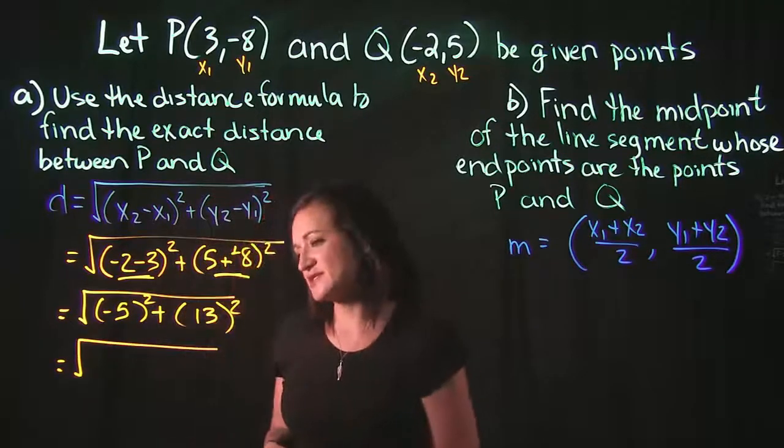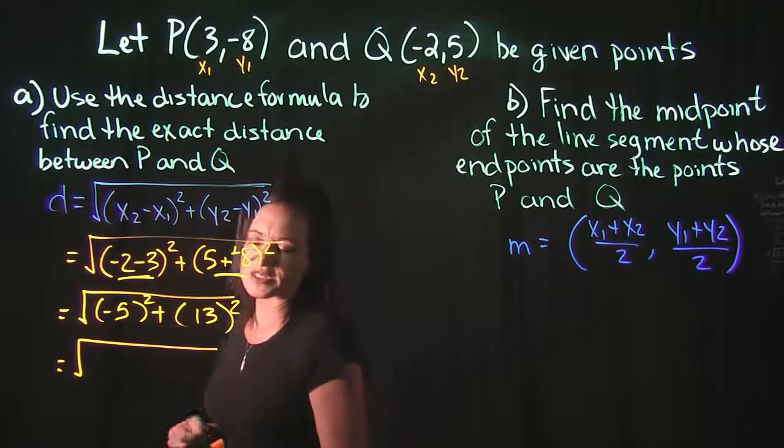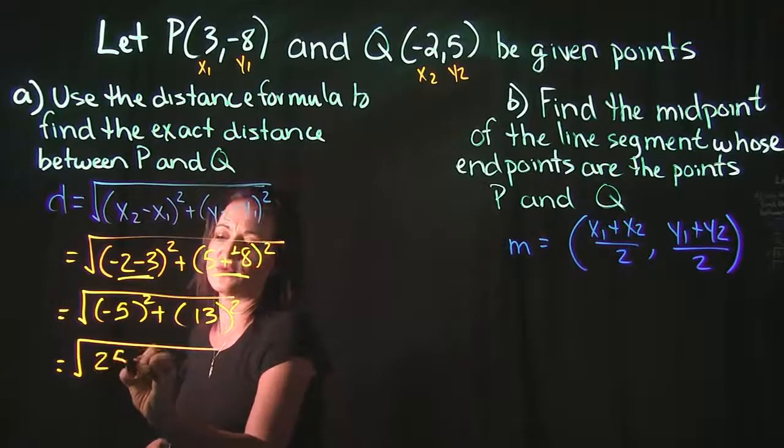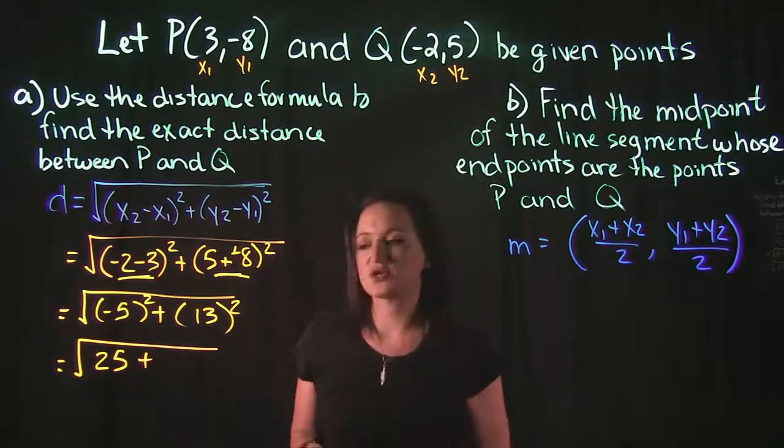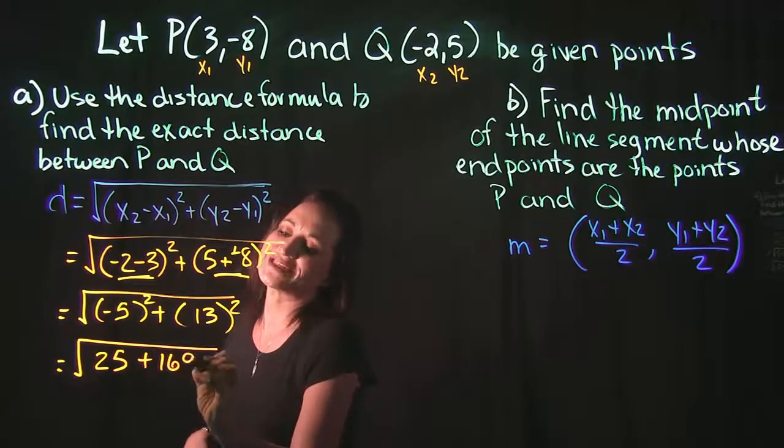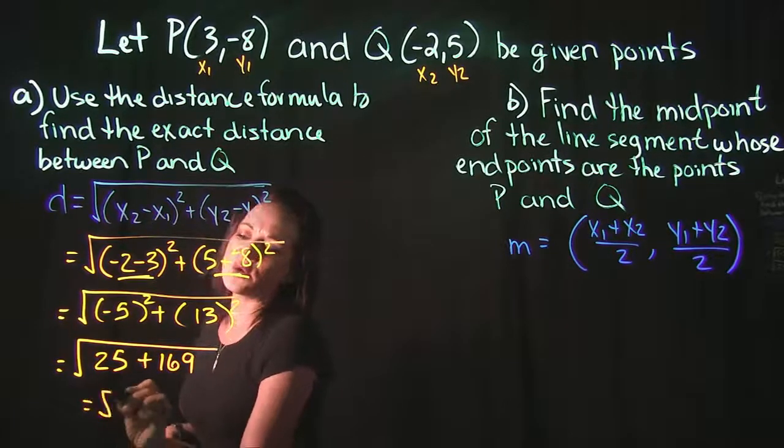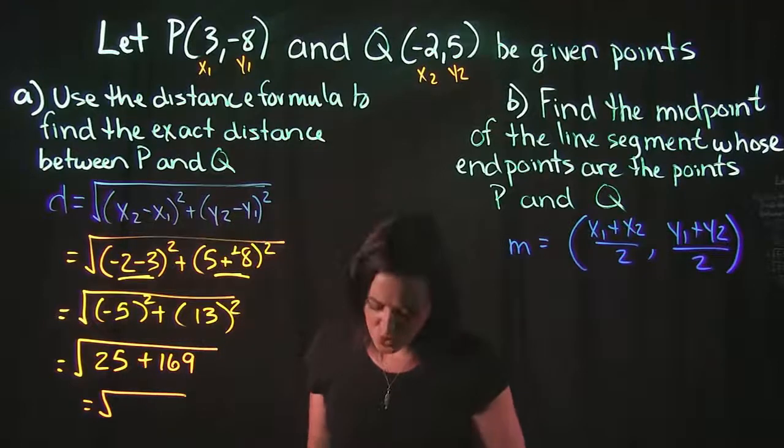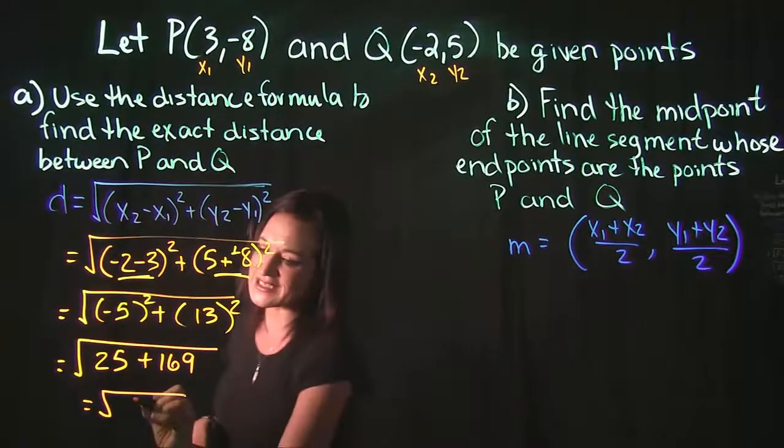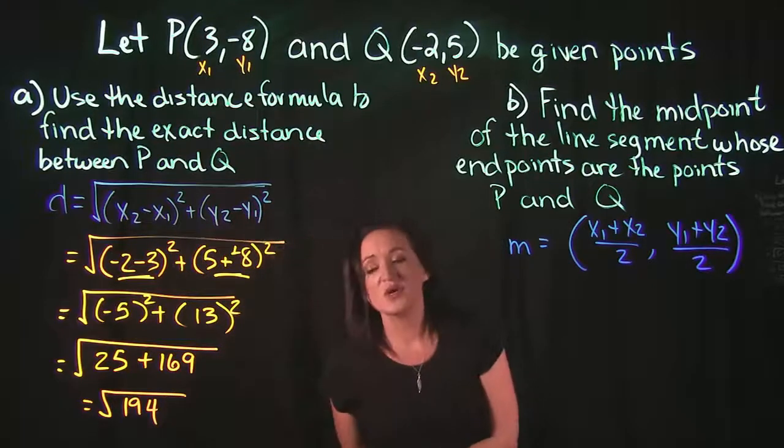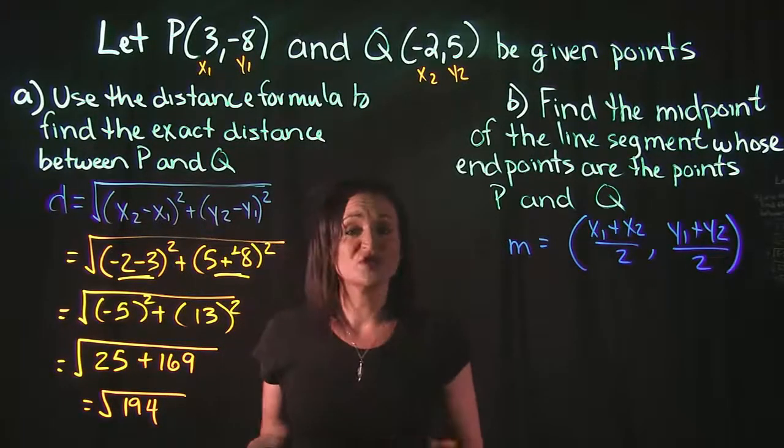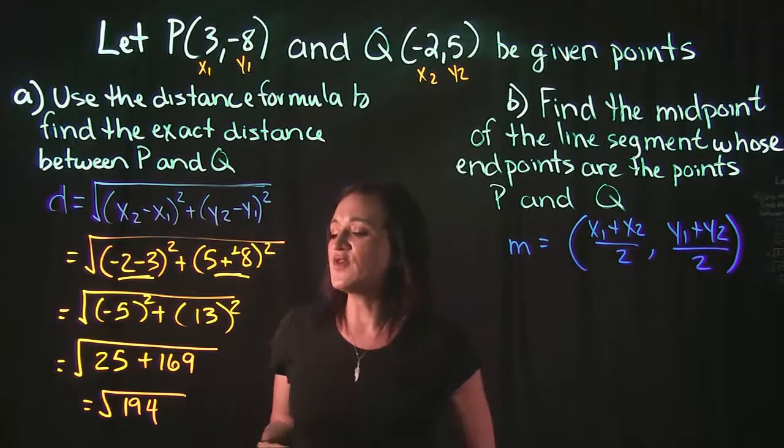Now I forgot the squares on here. Our next step, then, we need to square each one of these numbers. -5 squared, so that's -5 times -5, which is 25, plus 13 squared, so that's 13 times 13, which is 169. And when we add these together, 25 plus 169 equals 194.